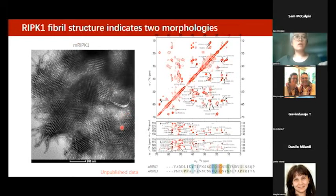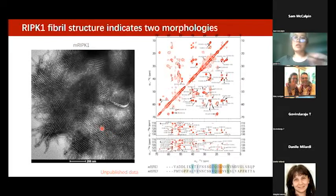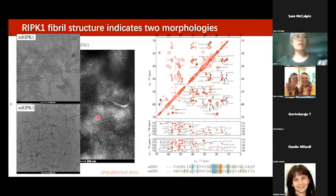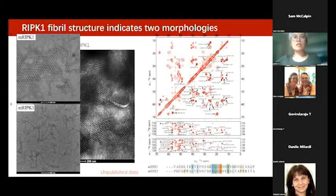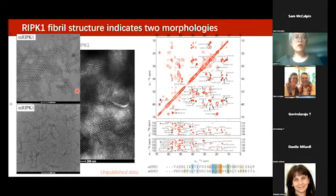We also carried out RIPK1 fiber structure studies — these are unpublished data. We surprisingly observed a lattice pattern for mouse RIPK1. By changing buffer conditions, we can fine-tune the fiber into a single-stranded or web-like structure. Both structures give similar solid-state NMR spectra at the secondary structure level, suggesting they are the same at that level, but may differ at the tertiary or quaternary contact level.